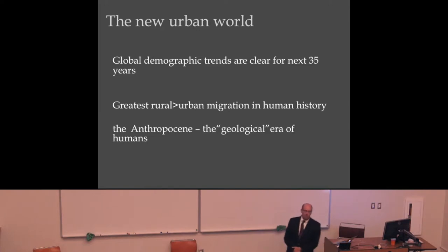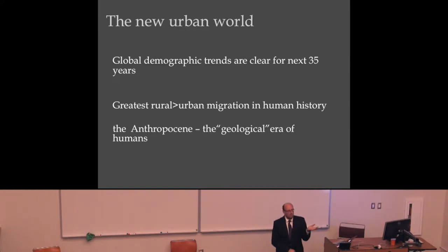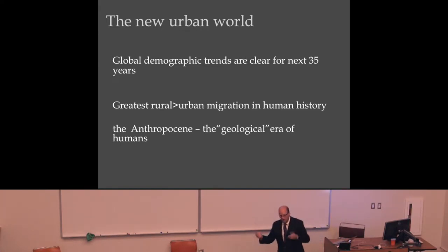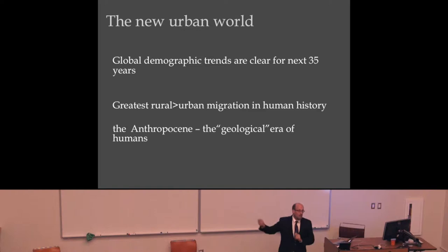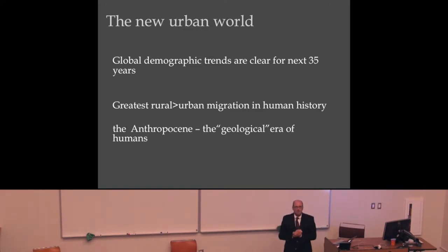The greatest rural-to-urban migration in human history is going on. China is perhaps the poster child for that. Many people intuitively think China is a very urban country because of Shanghai, Beijing, Shenzhen — all these mega-cities with five to ten million people. Yet China is far less urban than the United States, but it's catching up very quickly. And then there's the idea of the Anthropocene — that people are starting to become a geological force on a planetary scale.